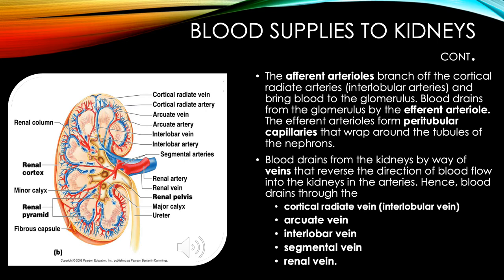The afferent arterioles branch off the cortical radiate arteries and bring blood to the glomerulus. Blood drains from the glomerulus by the efferent arteriole. The efferent arterioles form peritubular capillaries that wrap around the tubules of the nephrons. Blood drains from the kidneys by veins reversing the direction: cortical radiate vein → arcuate vein → interlobar vein → segmental vein → renal vein.